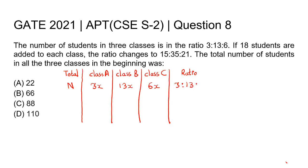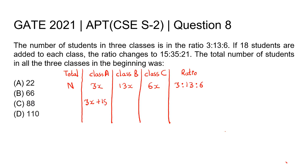Now we are adding 18 students to each class. So students in class A will become 3x plus 18, class B will become 13x plus 18, and class C will become 6x plus 18. The new ratio is 3x plus 18 to 13x plus 18 to 6x plus 18.